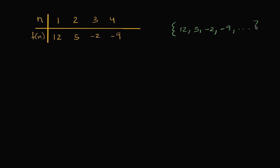You might notice that it's an arithmetic sequence. We start with 12, and then the next term — what have we done? We've subtracted seven. To go from the second to the third term, we subtract seven again. So each term is seven less than the term before it.